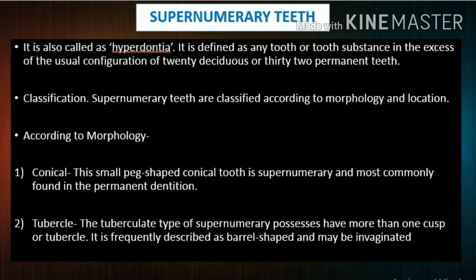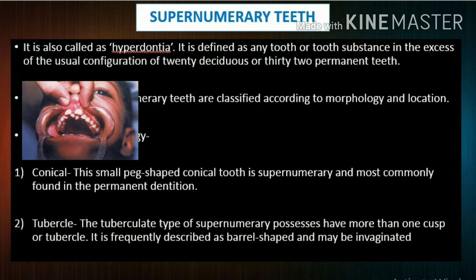Supernumerary teeth are classified according to morphology and location. According to morphology: Conical — this small peg-shaped conical tooth is supernumerary and most commonly found in the permanent dentition. Tuberculate — the tuberculate type of supernumerary possesses more than one cusp or tubercle. It is frequently described as barrel-shaped and may be invaginated.